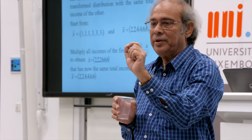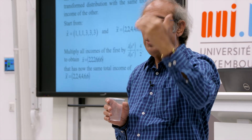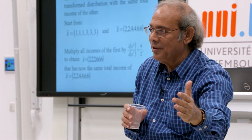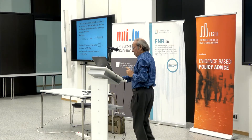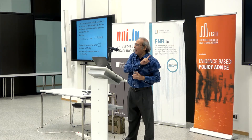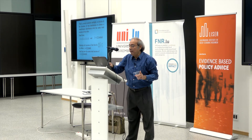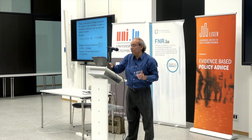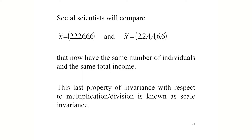Loosely speaking, scale invariance means: when you are converting euros into cents, inequality does not change. With population replication invariance, we can make population sizes the same; with scale invariance, we can make totals the same. Thus, under both postulates, the inequality comparison of distributions with different population sizes and different totals is equivalent to that of transformed distributions having the same total income and same population size.